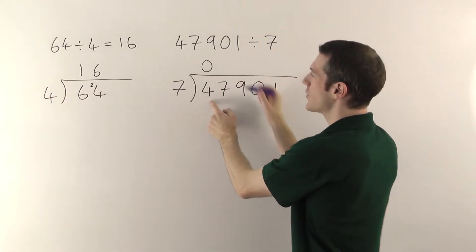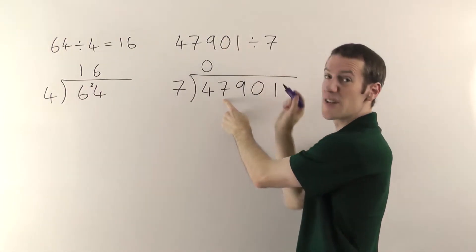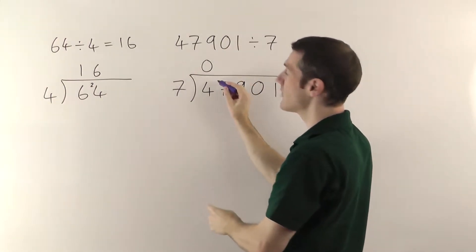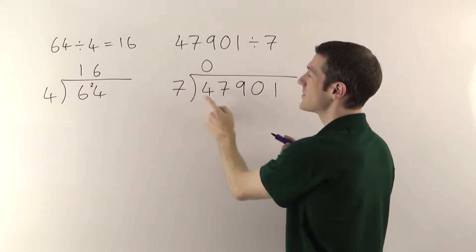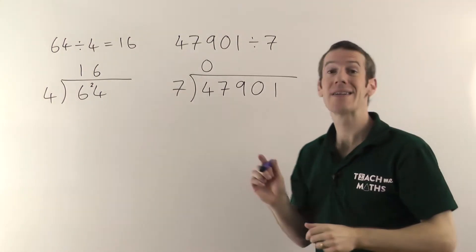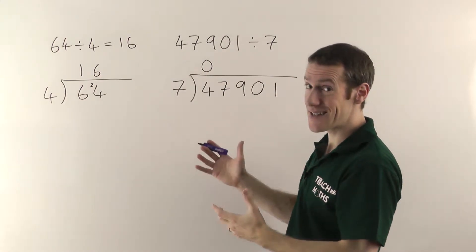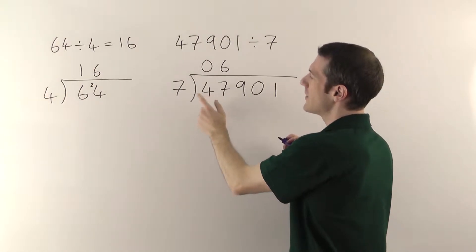What you can just do is say, well, 7s into 4 go nothing, and so I'm going to divide into 47, and you can just read the number across like that. So 7s into 47. Now 7s into 47 will go 6 times. 6 sevens are 42, so you write the 6 there.